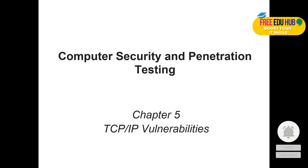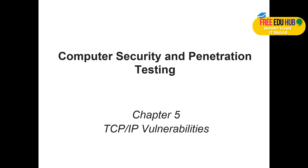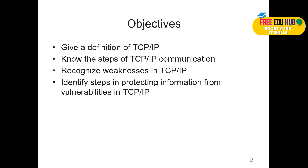Welcome to network security and penetration testing. Today we start chapter five, which talks about TCP/IP vulnerabilities. TCP/IP plays an important role — there are four layers of TCP/IP and seven layers of the OSI model. The objectives are: give a definition of TCP/IP, know the steps of TCP/IP communication, recognize the weaknesses in TCP/IP, and identify the steps in protecting information from TCP/IP vulnerabilities.